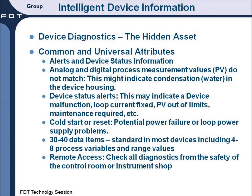What does this intelligent device information look like? The information falls into two categories: one, common and universal attributes; and second, device-specific attributes. In the case of common and universal attributes, these are alerts and device statuses that give you a quick idea as to whether or not there's a potential problem — alerts such as a device malfunction, that the loop current might be fixed, someone might have left it in that position by accident, or that the process variable is out of limit, or that there was a cold start or reset indicating possibly a loss of power. In most cases there are 30 to 40 data items available for your review to be able to determine whether there's a problem.